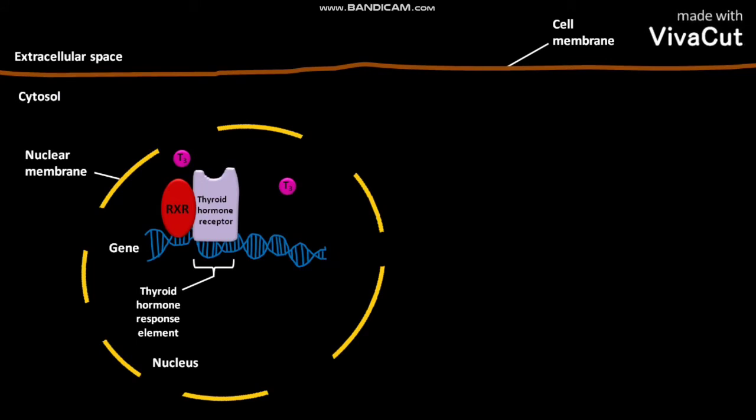T3 then binds to the inactive thyroid hormone receptor. Due to this binding, the inactive thyroid hormone receptor becomes active. It was found that more than 90% of the thyroid hormone molecules that bind with the thyroid hormone receptor is T3. The active thyroid hormone receptor then initiates transcription.